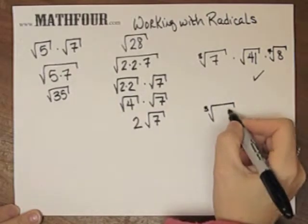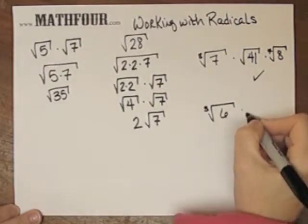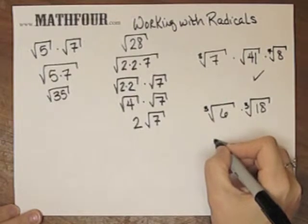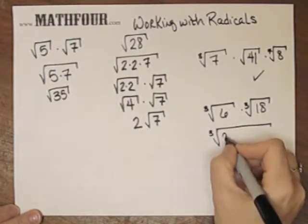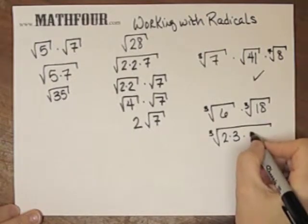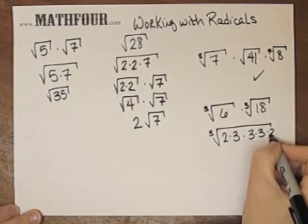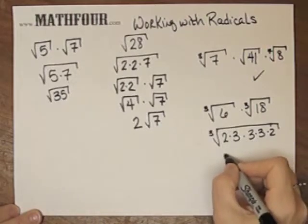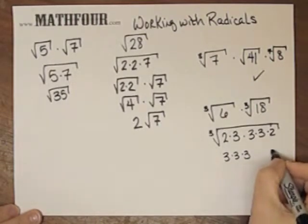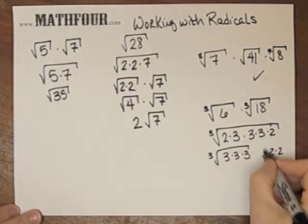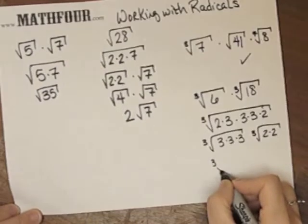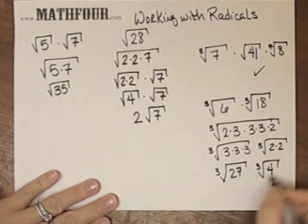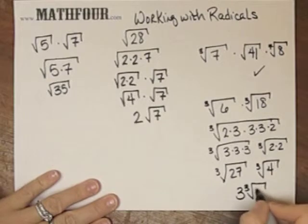So the cube root of 6 times the cube root of, let's say, 18 can be put together as the cube root of 6 times 18, which is 2 times 3. And 18 is 9 times 2. This is 18. This is 6. So I can scooch these around and I can do 3 times 3 times 3 and 2 times 2. So this is the cube root of 27 and this is the cube root of 4. So this is 3 cube root of 4.